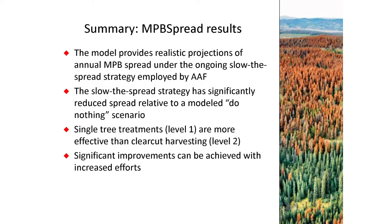To summarize the results: the model provides realistic projections of annual mountain pine beetle spread under the ongoing slow-the-spread strategy. The strategy has significantly reduced spread relative to do-nothing scenarios. Single-tree treatments are more effective than clear-cut harvesting at slowing spread — the earlier you act, the more effective you'll be, which is an axiom from invasion biology. It's also worth noting that significant improvements can be achieved with increased efforts, though whether they're logistically or economically feasible is another question altogether.